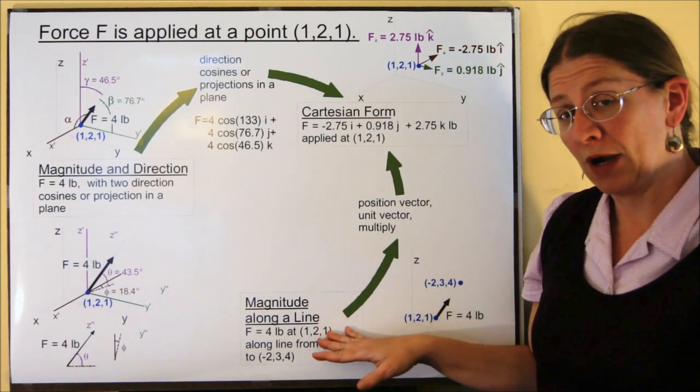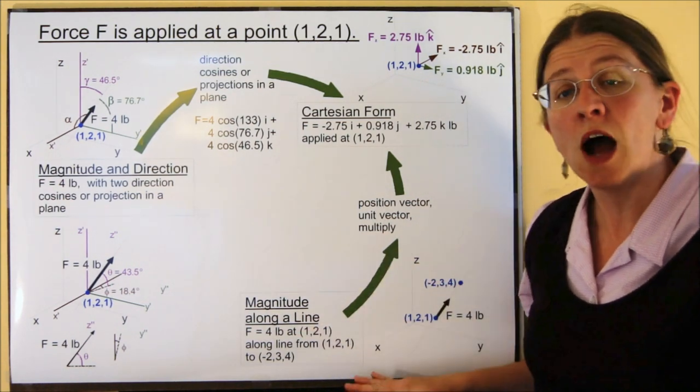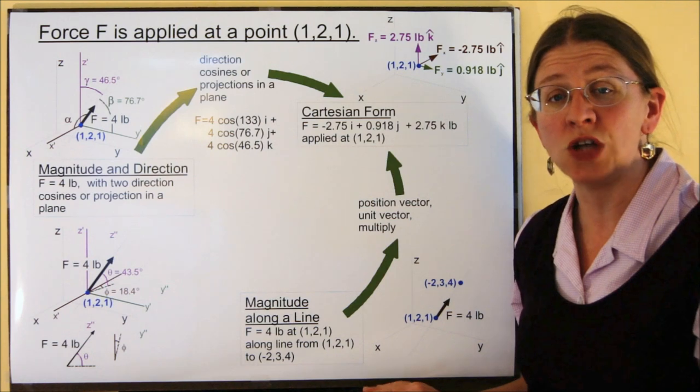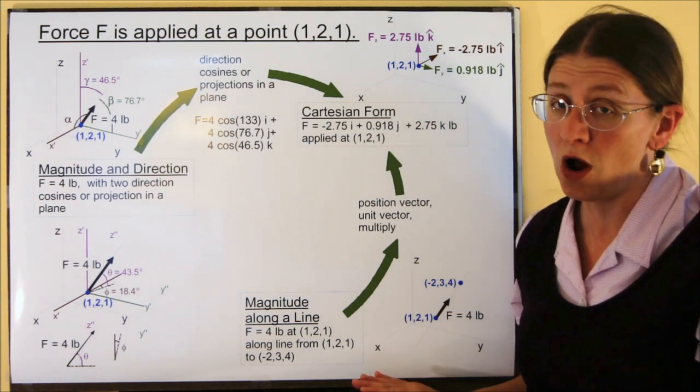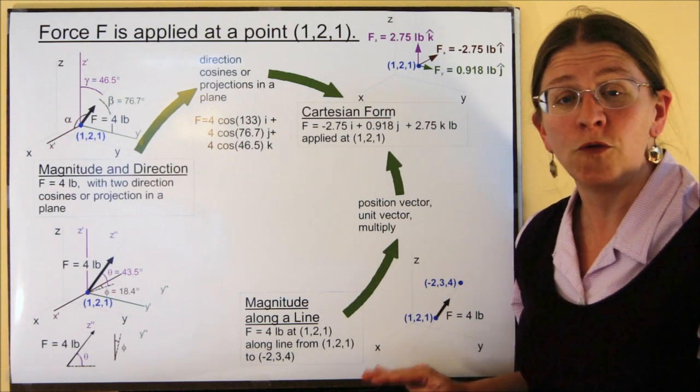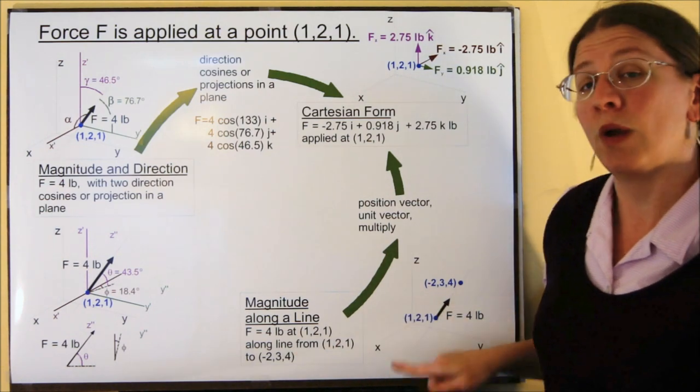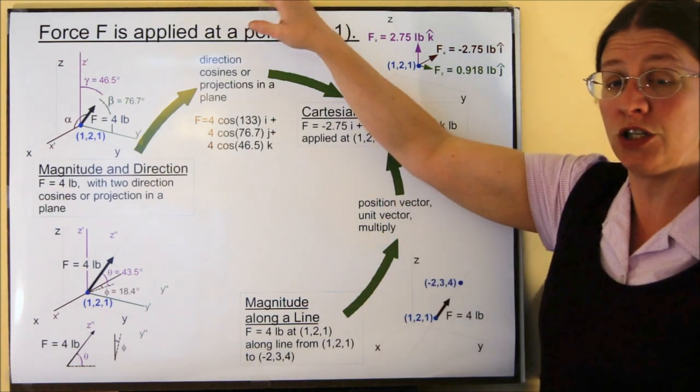What I want to talk about right now is magnitude along the line. This is a very common way in three dimensions to actually show a vector. It's perhaps the most common way because it's the easiest to draw, but it's not a form of a vector that we can work with very well.